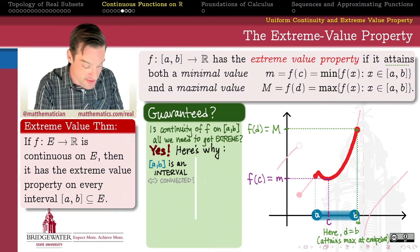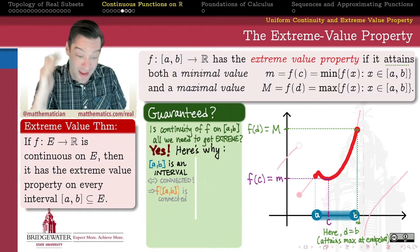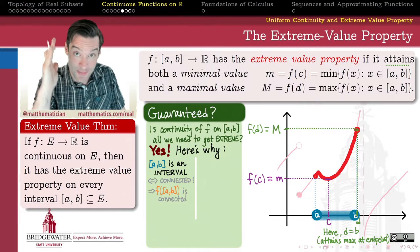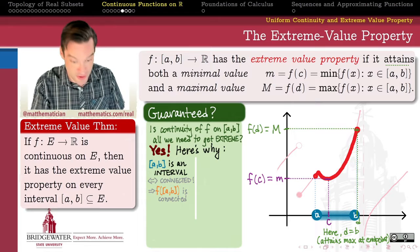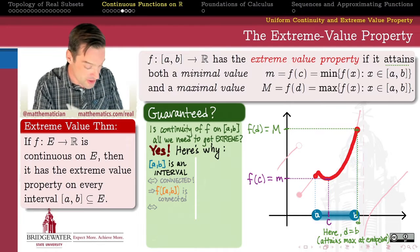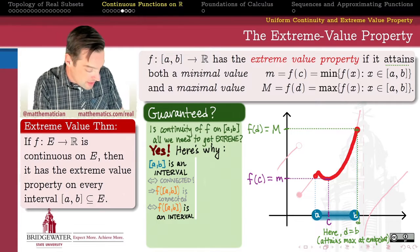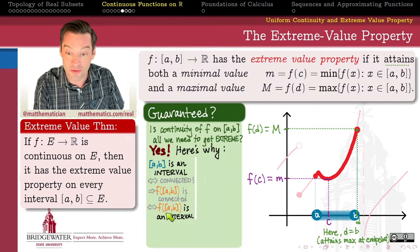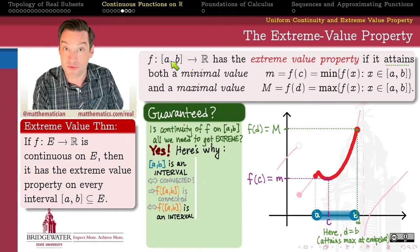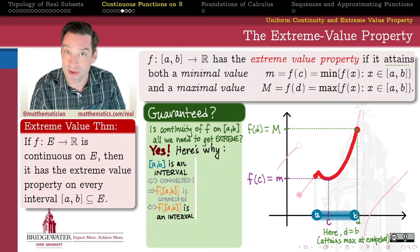We established that continuous functions take connected subsets of the domain to connected subsets of the range. So f of the interval [a, b] will also be a connected set — a connected subset of the codomain. And because there is no difference between connected sets and intervals when it comes to the real number line with the standard topology, f of [a, b] is an interval. We call f of [a, b] the range of f. So our domain is an interval containing both endpoints, and now we know the range is also an interval — though we don't yet know it contains both its endpoints.